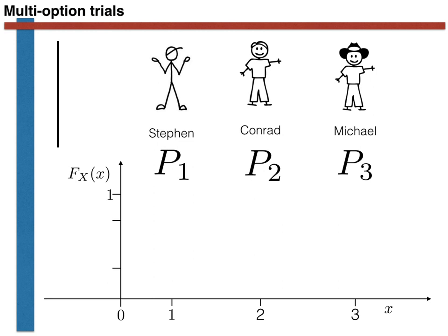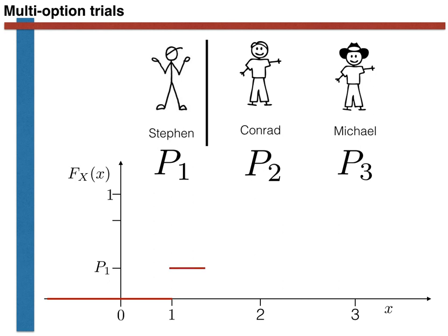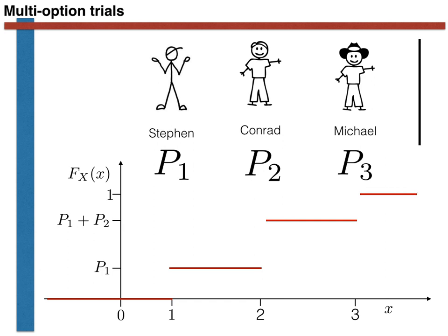With all this information in place, we can construct a cumulative probability distribution function for this random variable. For all x less than one, the value of this function is zero. For all x greater than or equal to one and less than two, the value of the cumulative probability distribution function is p1. For all x greater than three, the value of the cumulative probability distribution function is one.